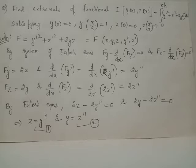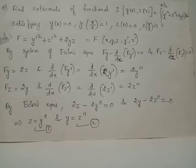Here we have dependent variables y and z and single independent variable x. We have capital F as the function y dash square plus z dash square plus 2yz. This represents a function on two dependent variables y and z, where the independent variable is x. We also have partial derivatives of dependent variables y dash and z dash represented in this function capital F.